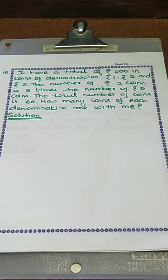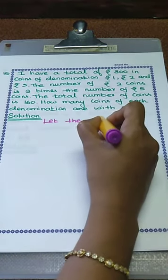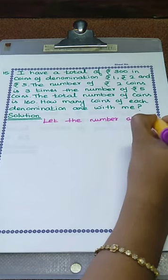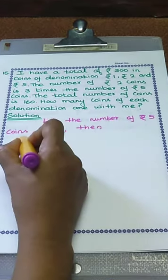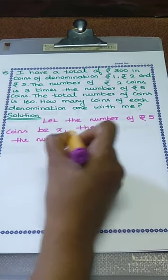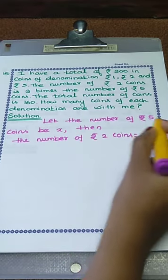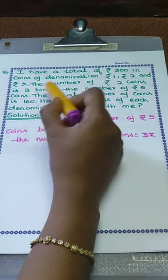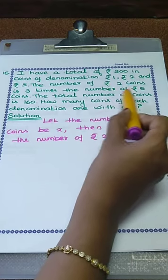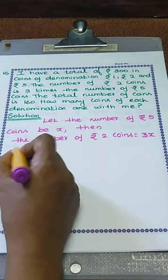So first we assume the Rs. 5 coin count as x. Then we take the Rs. 2 coin value. Let the number of Rs. 5 coins be x. Then the number of Rs. 2 coins is 3x, because the number of Rs. 2 coins is 3 times the number of Rs. 5 coins. Automatically we take Rs. 2 coin count as 3x.